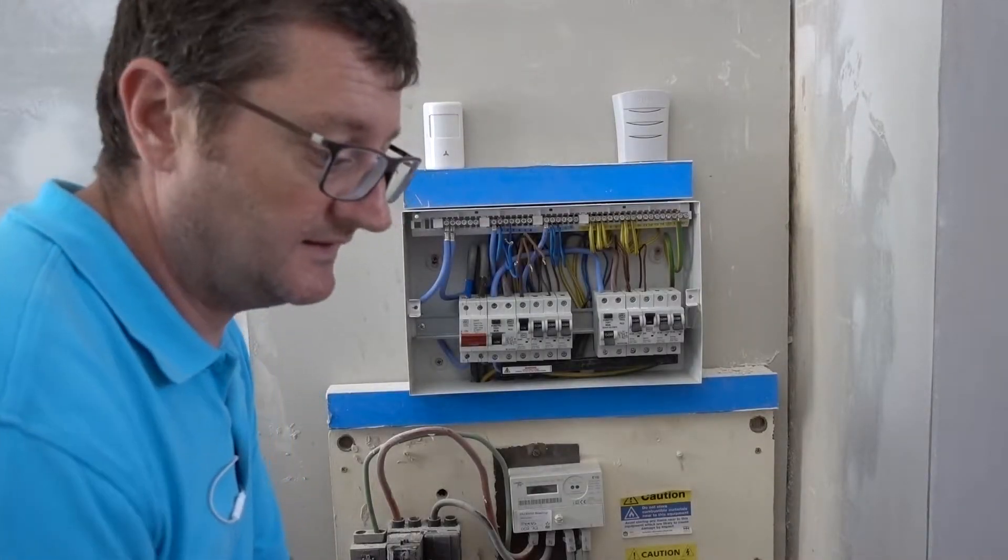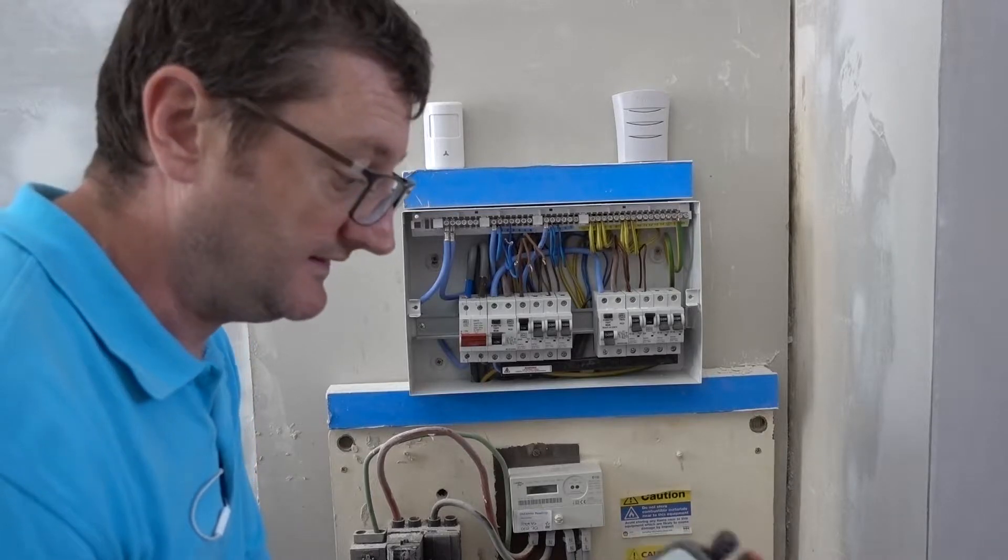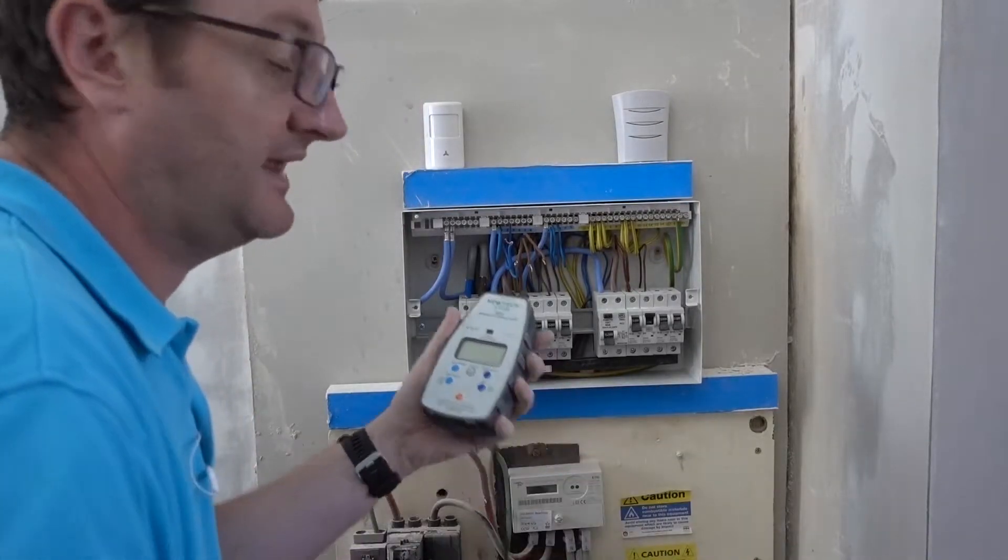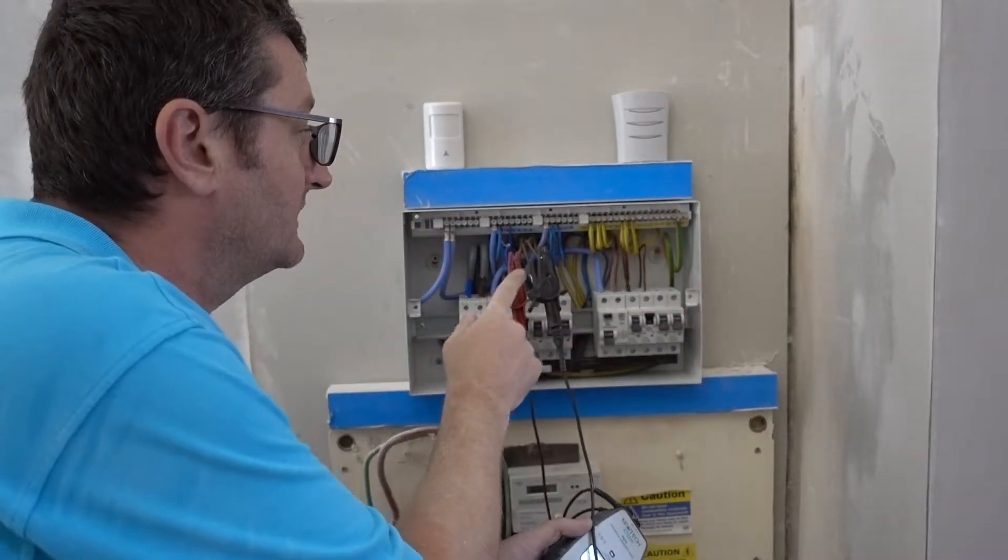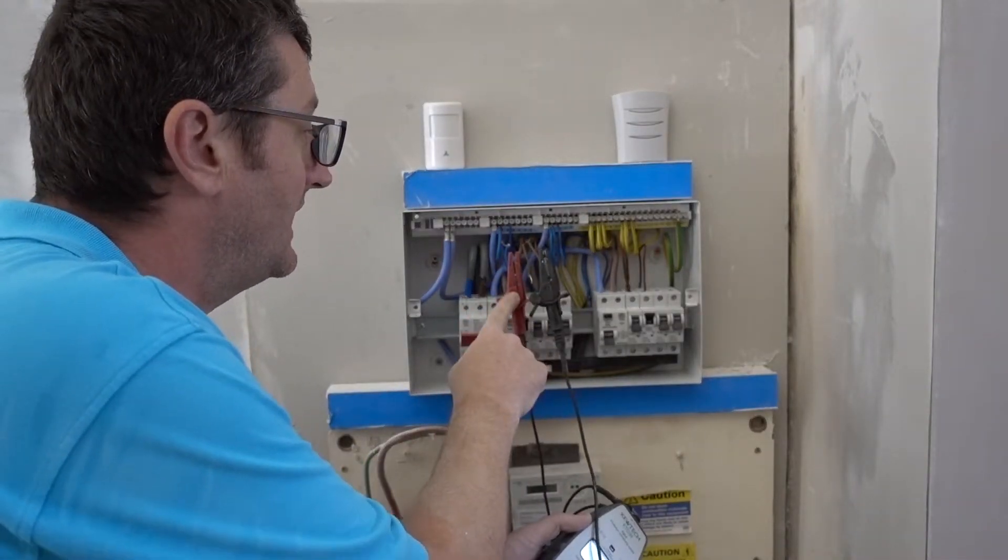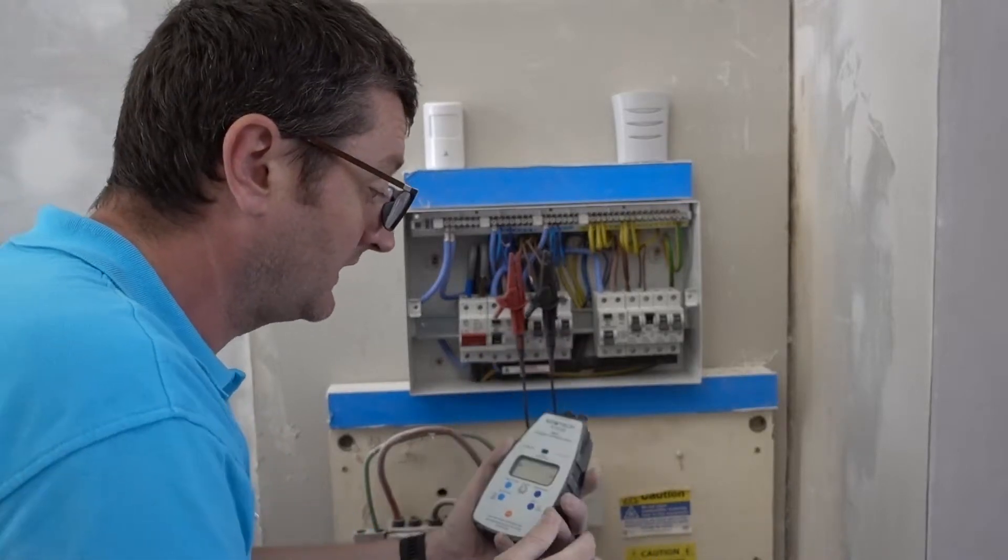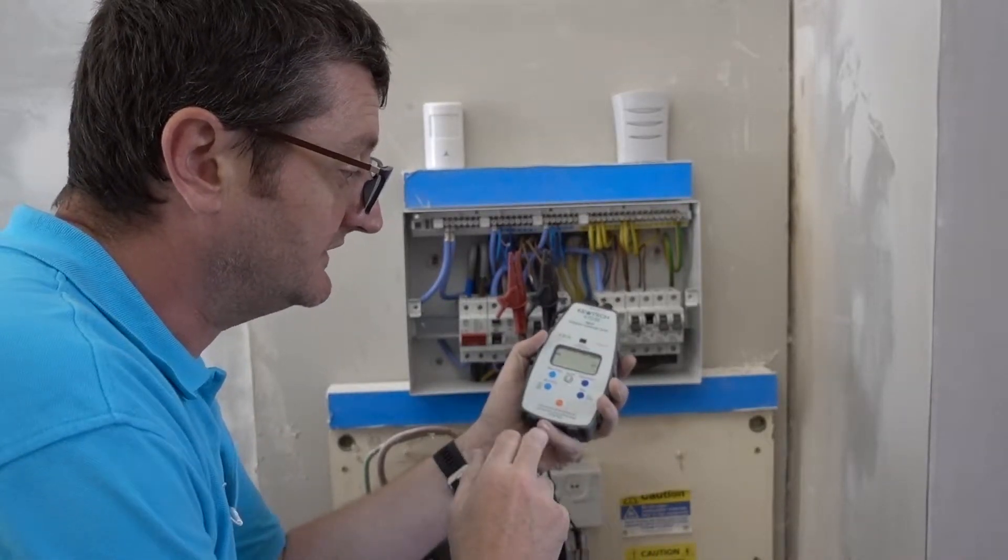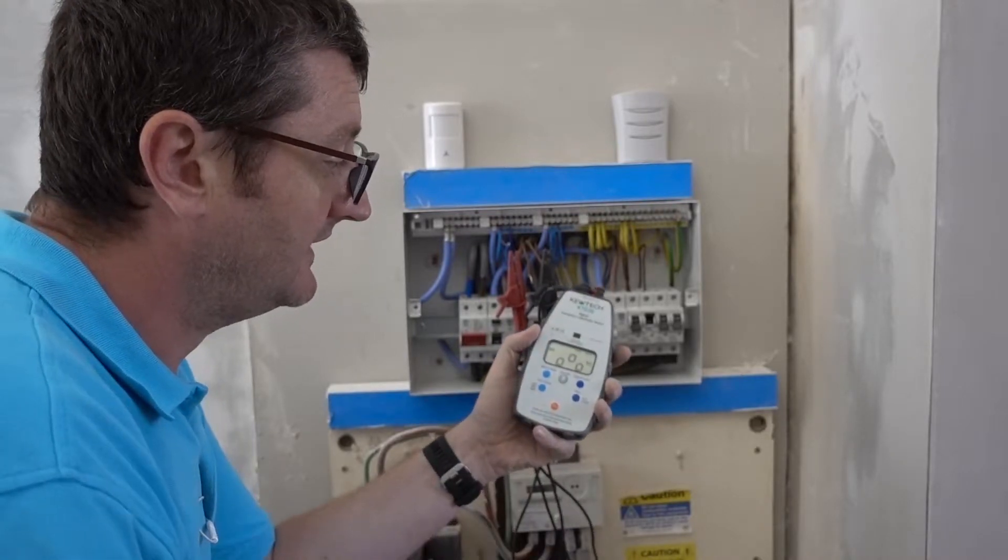Right. So let's take a look at the insulation resistance test. So again with that QTEC KTD30. So clip onto, in this case I'm doing live against neutral. Turn on your machine. 500 volts. Insulation test. And test.